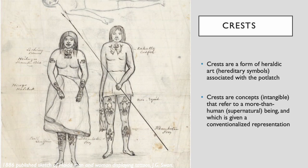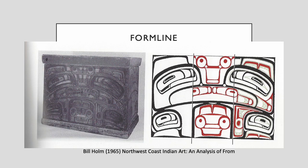It can be informative to think of crests and the totem poles that carry them as similar to European coats of arms — they mark specific family histories, statuses, roles, and responsibilities, and they cannot be owned or reproduced by just anybody. In the north, crests are depicted in a conventionalized style known as form line.